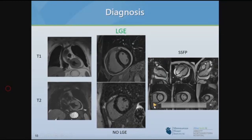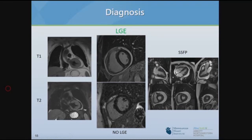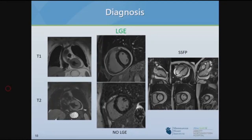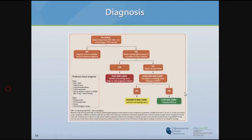We also use SSFP cine imaging without contrast — the traditional workhorse MRI sequence — to assess ventricular function, size of pericardial effusion, and wall motion. This is a patient with a large pericardial effusion where the heart is clearly swinging within the effusion, and ventricular size and function are assessable.